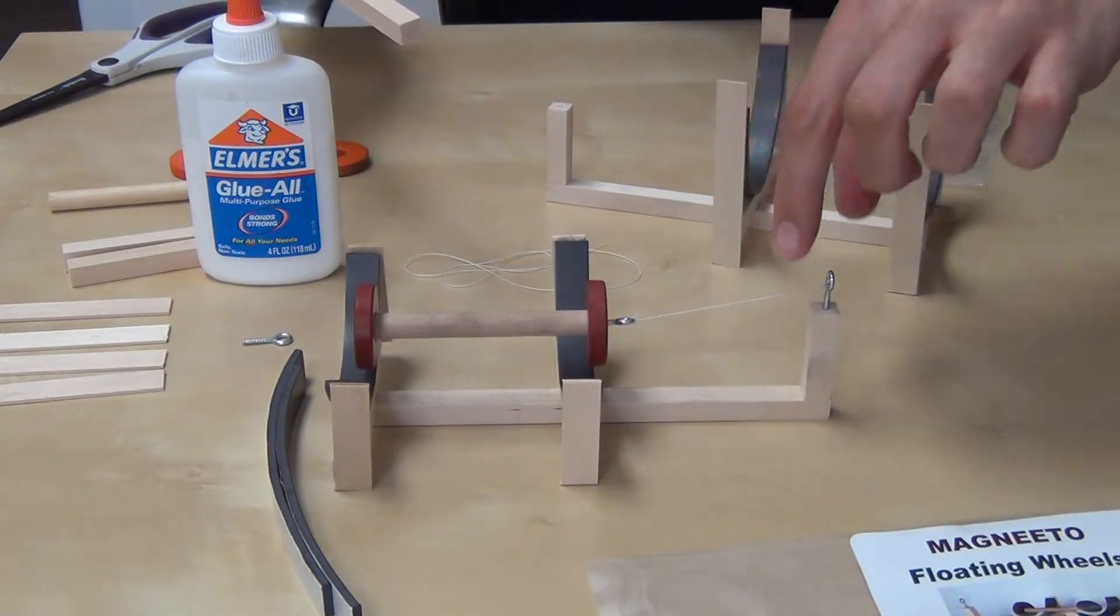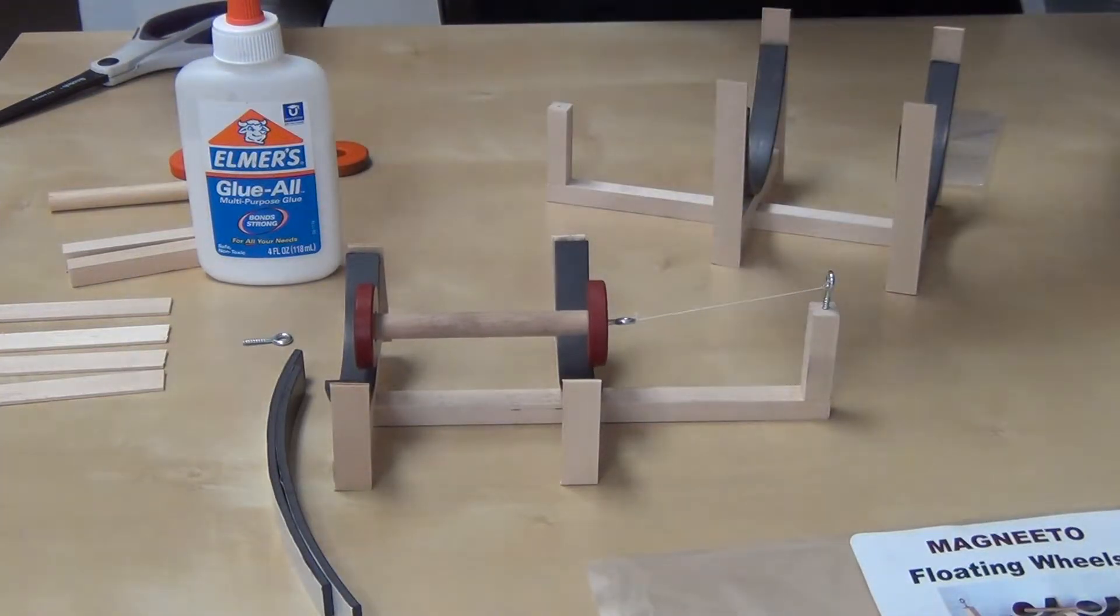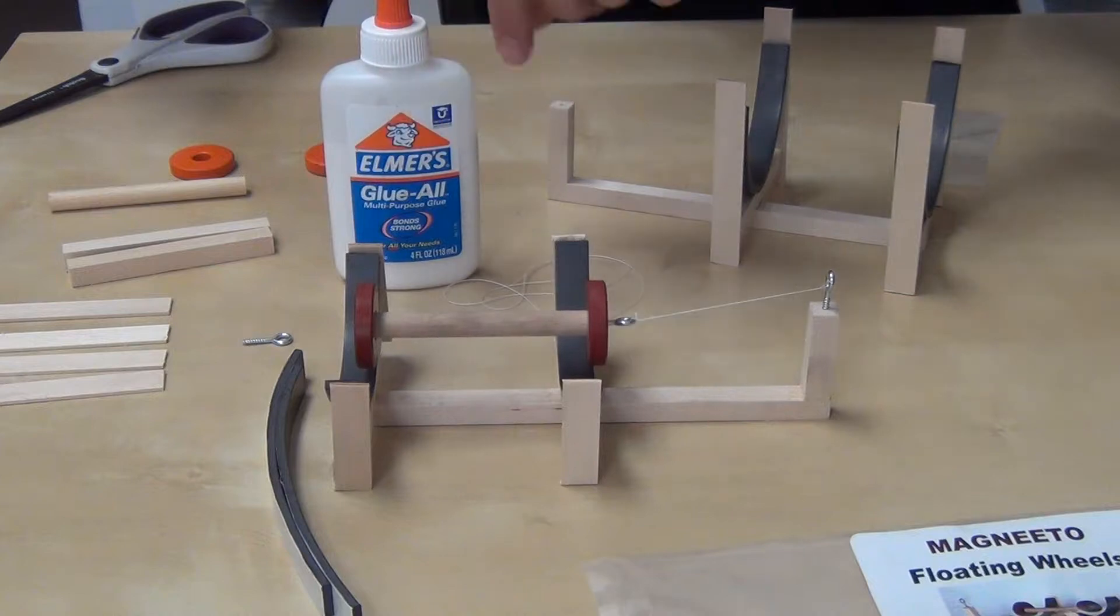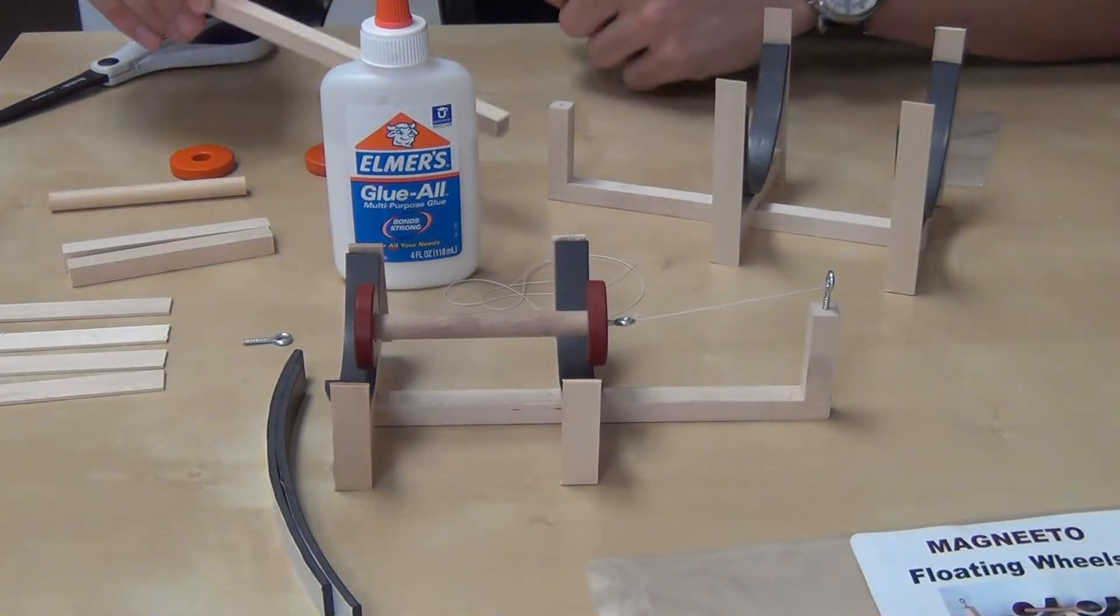As you can see, it's attached to a string. So all you really need besides the kit is a piece of string. A clear one or a fishing line would work as well. And some glue. We have all-purpose glue or wood glue would work as well.